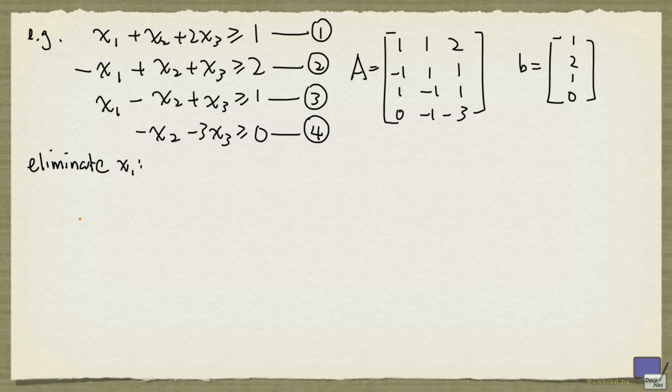So what we do is we need to first write down any inequalities that has no variable x1, and the fourth inequality is such an inequality.